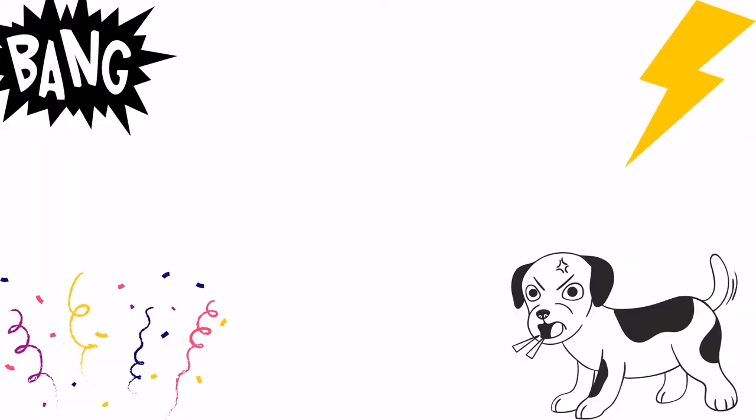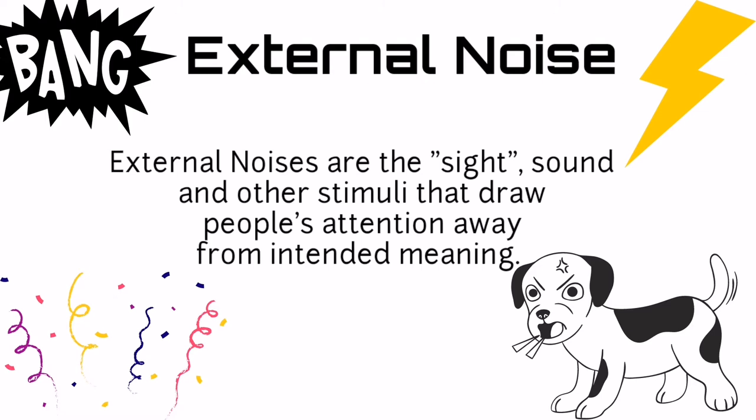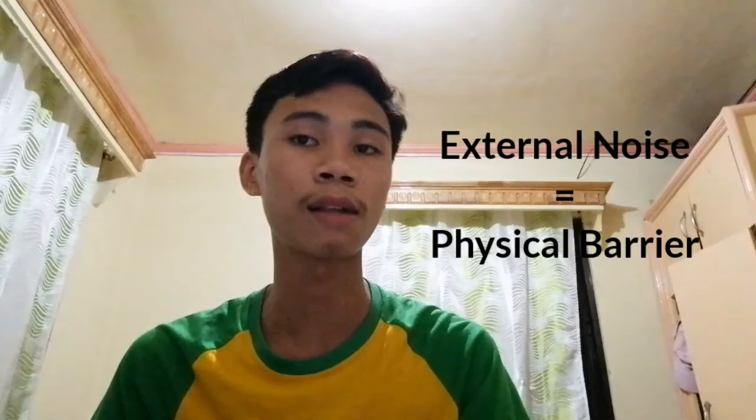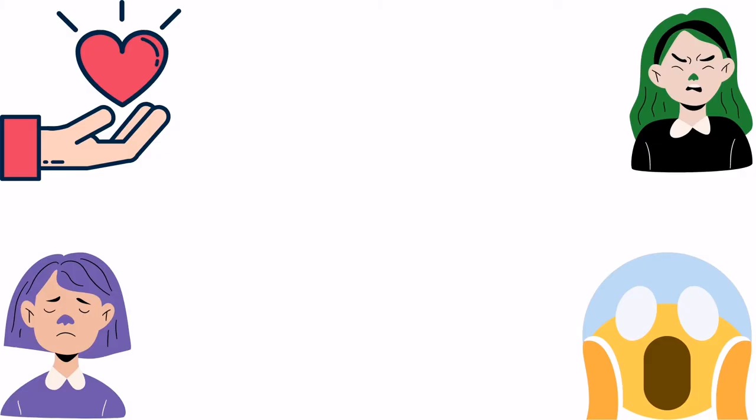First, let us talk about external noise. External noises are the sights, sounds, and other stimuli that draw people's attention away from intended meaning. Examples of external noises: noise from vehicles, singing in the neighborhood, a dog barking, and the sound of an airplane. Since external noise acts as a physical factor that hinders the communication between the sender and the receiver, so basically it is a physical barrier.